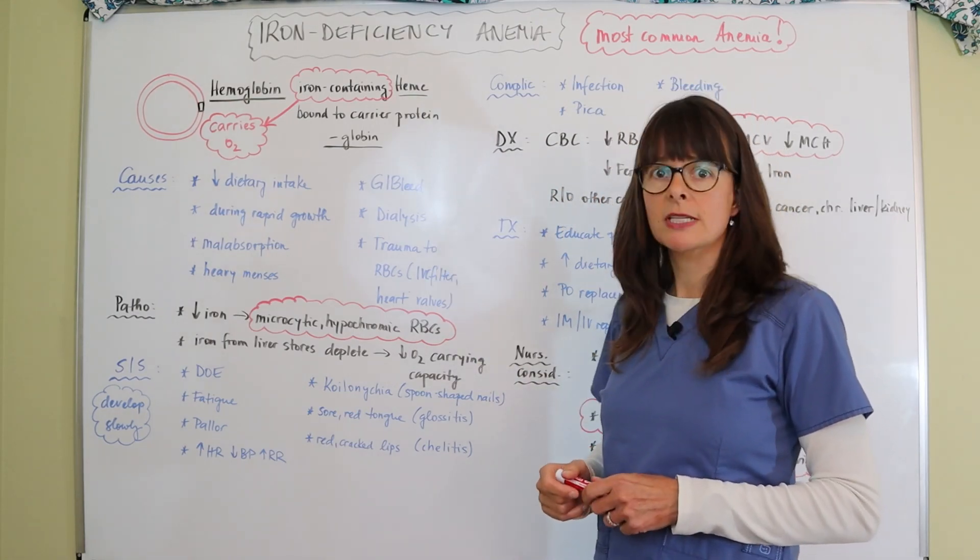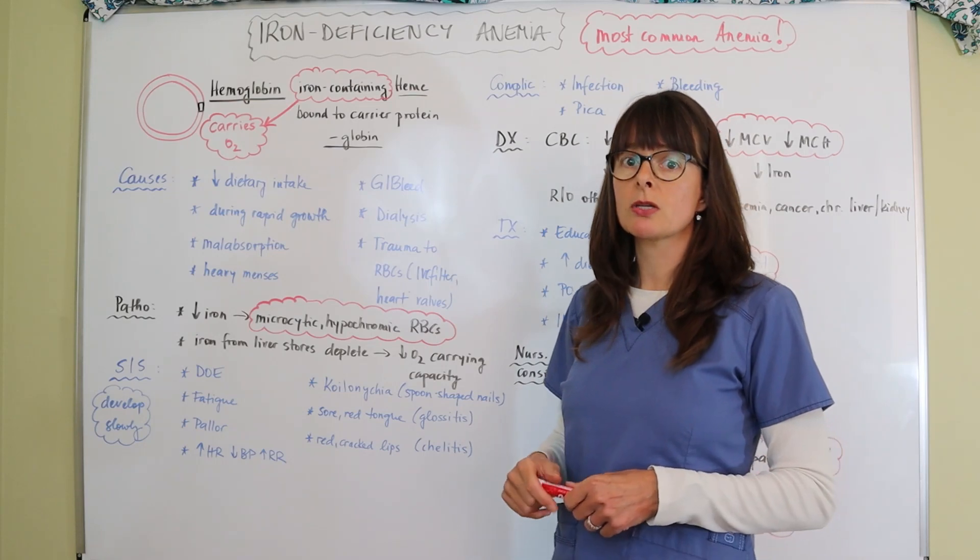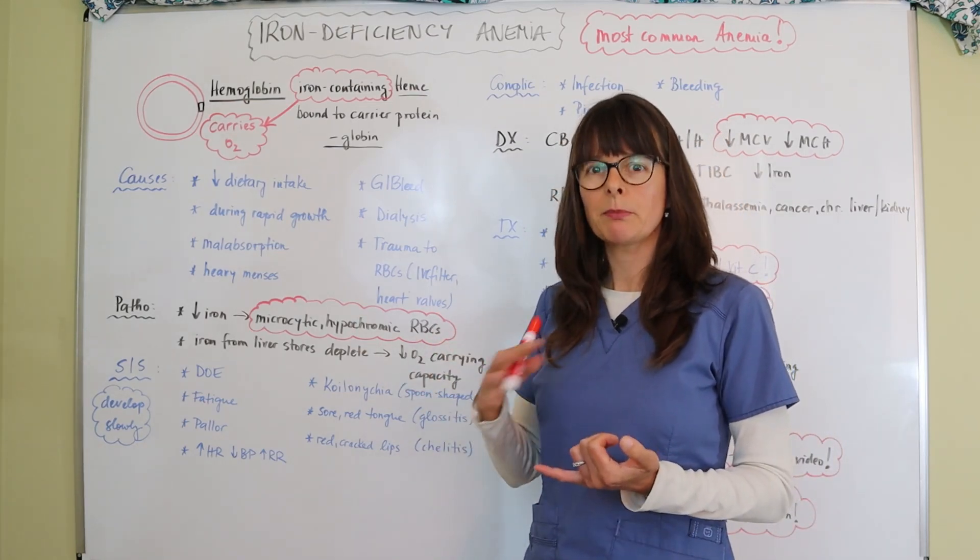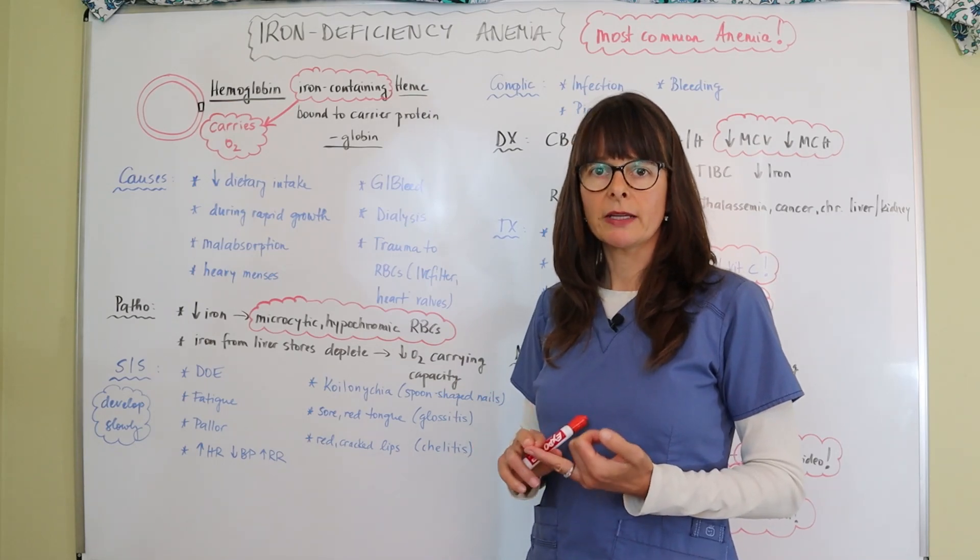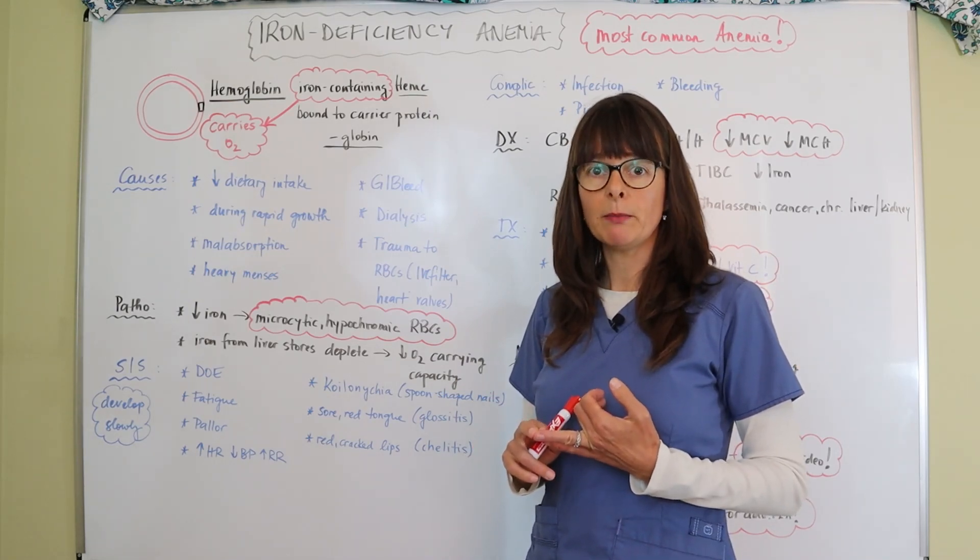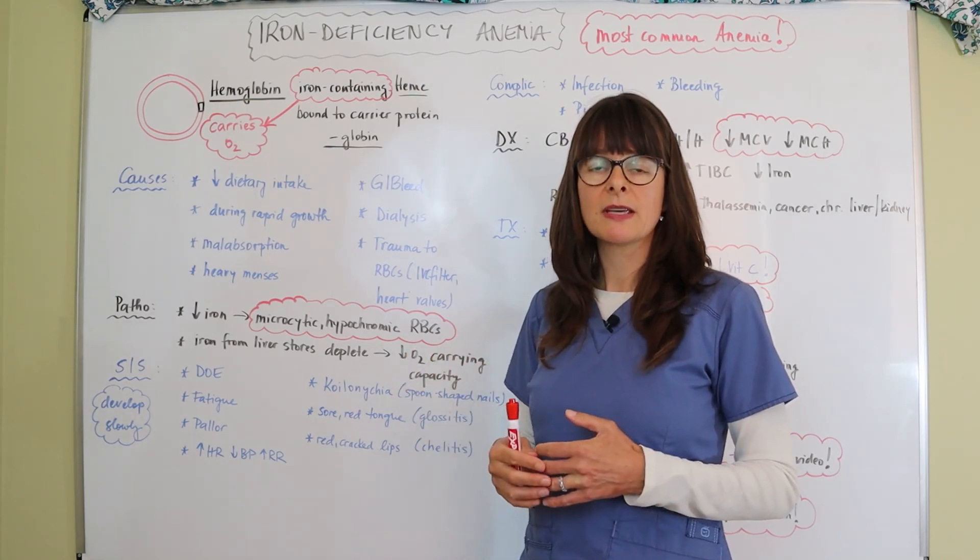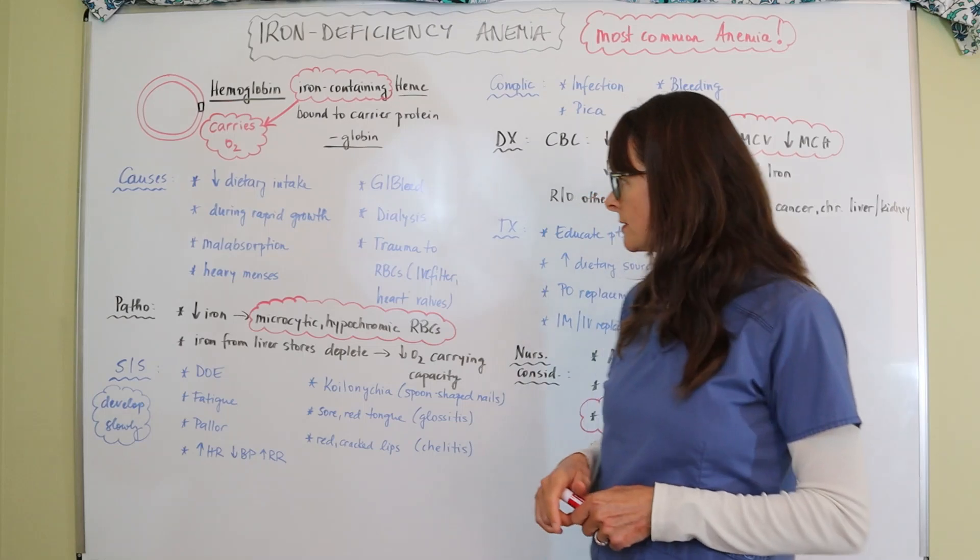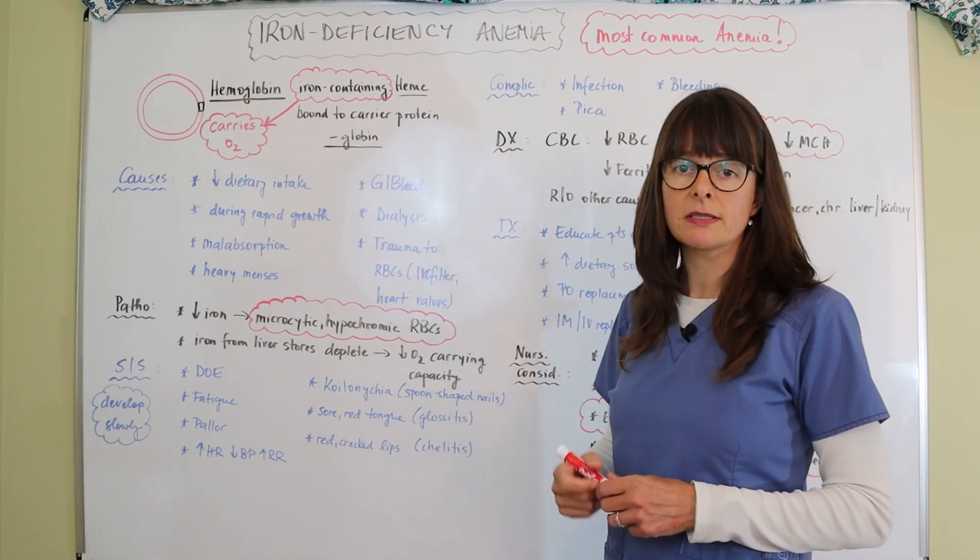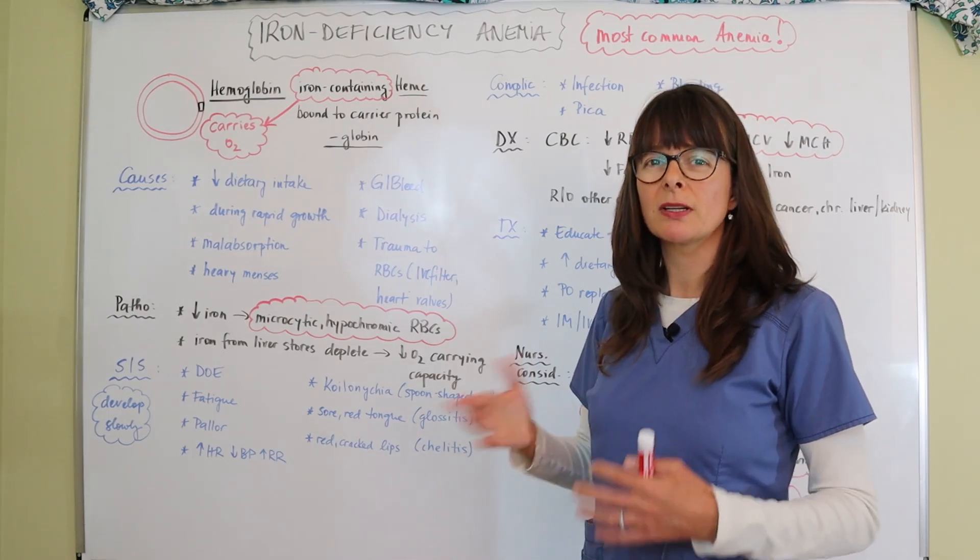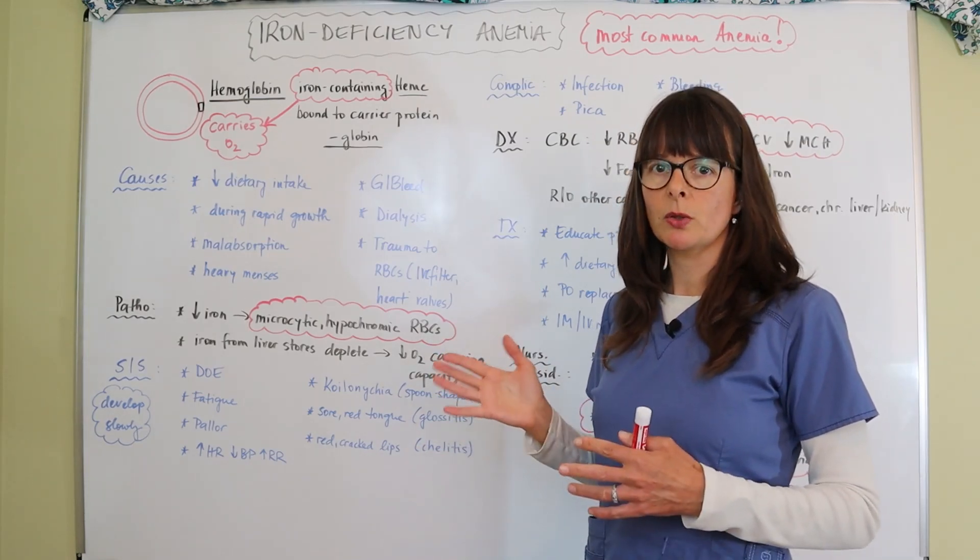Patients on dialysis are at risk for iron deficiency anemia because first of all their blood gets filtered through the equipment so there can be some trauma there, and second of all they have to get frequent blood sampling because of checking their labs, and so they can become iron deficient in addition to chronic kidney disease which actually can lead to anemia of chronic disease.